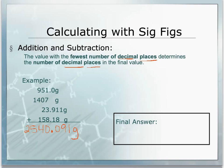The first measurement has one decimal place, the second has zero, the third has three, and the final measurement has two. So our smallest number of decimal places is the second measurement with zero decimal places. Since that is the smallest, we have to record our final answer with no decimal places. So our final answer would be 2540 with the decimal point indicated, no decimal places, and the unit grams.